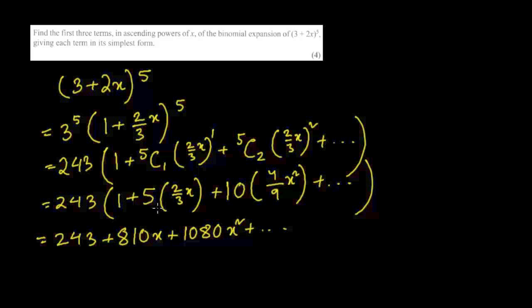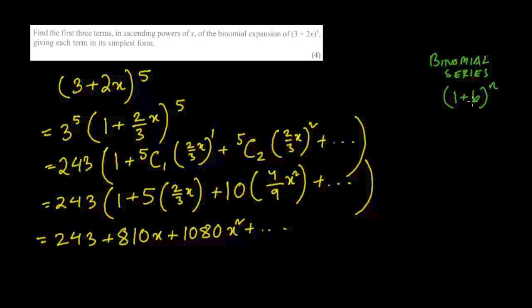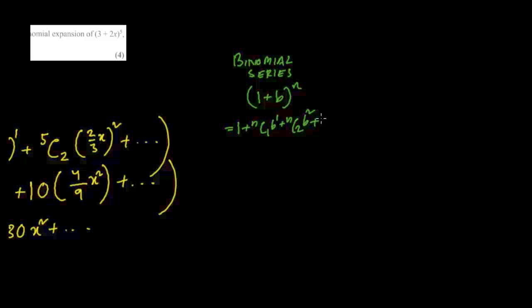Remember, for binomial series the basic rule is the expression must be in the form (1 + b)^n, giving: 1 + nC1·b + nC2·b² + nC3·b³ and so on. You can use the calculator to compute the combination values.